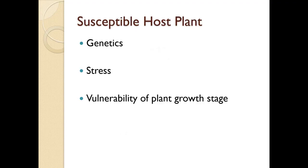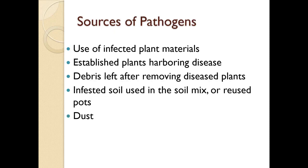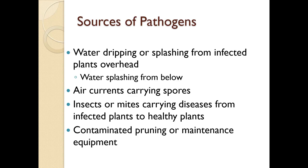A susceptible host plant may have the genetics that make it prone to disease, stress is very much a part of this, and a certain growth stage may be vulnerable to the pathogen. Sources of pathogens include other infected plant materials, established plants that have diseases, debris left behind, infested soil used in the soil mix or reused pots, even dust, water dripping and splashing from infected plants overhead, water splashing from below, air currents carrying spores, insects or mites carrying diseases from infected plants to healthy plants, and contaminated pruning and maintenance equipment.